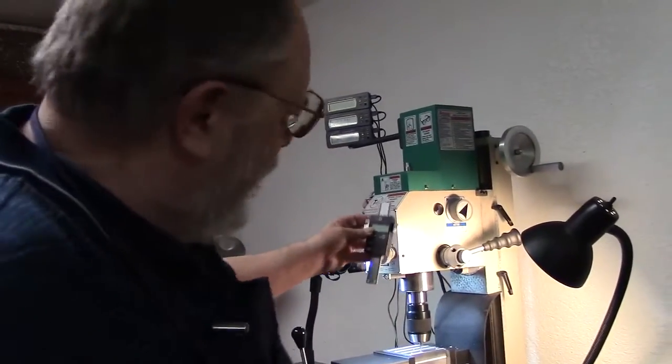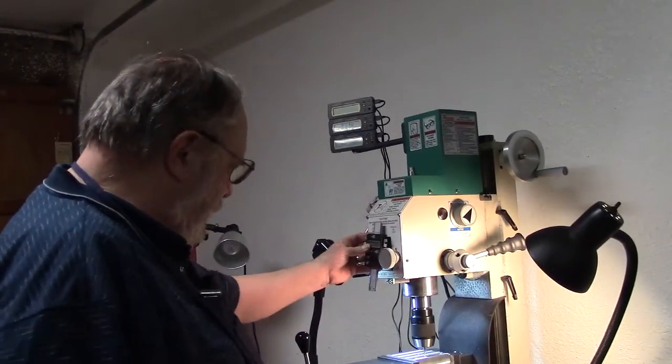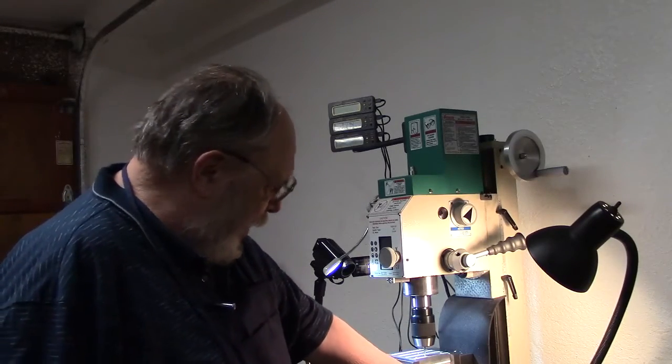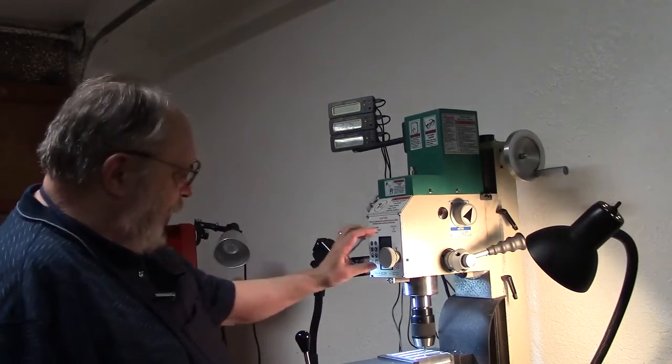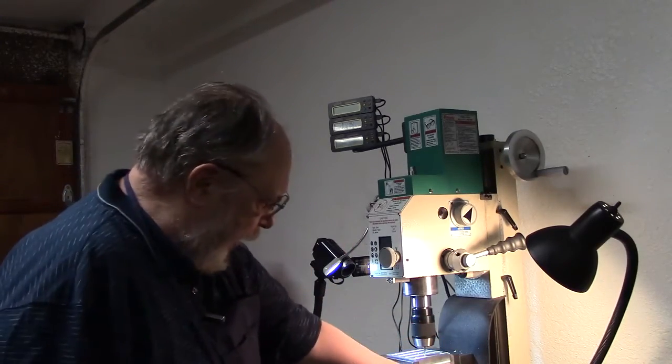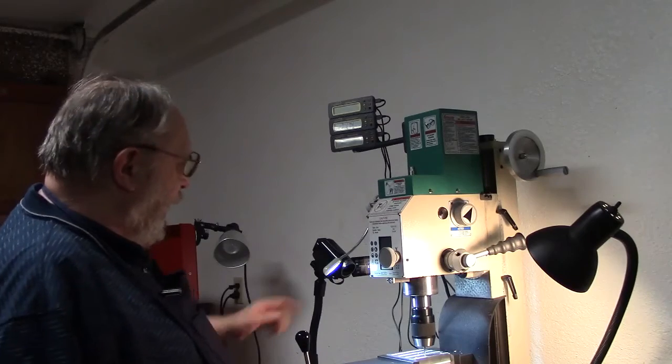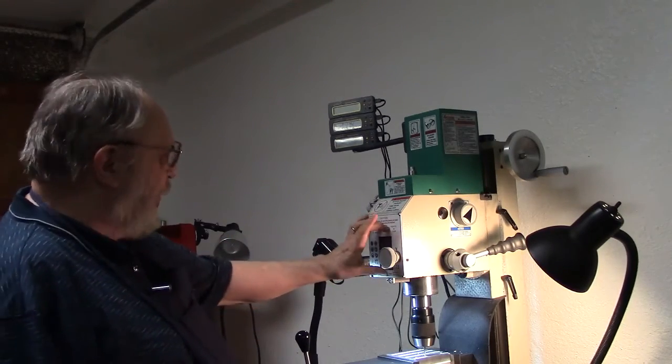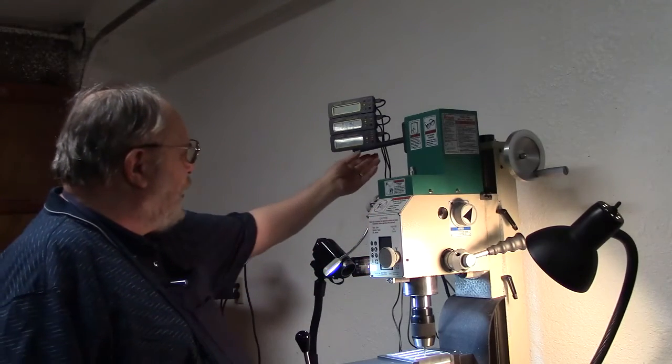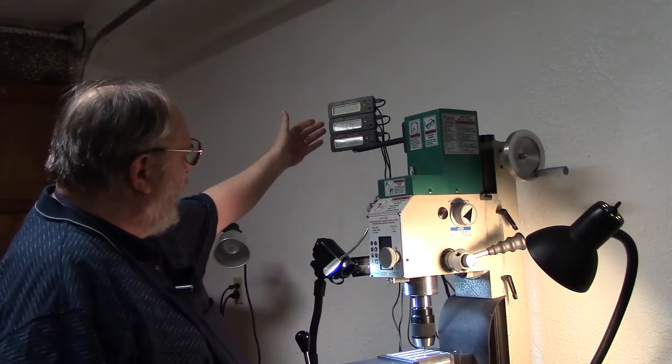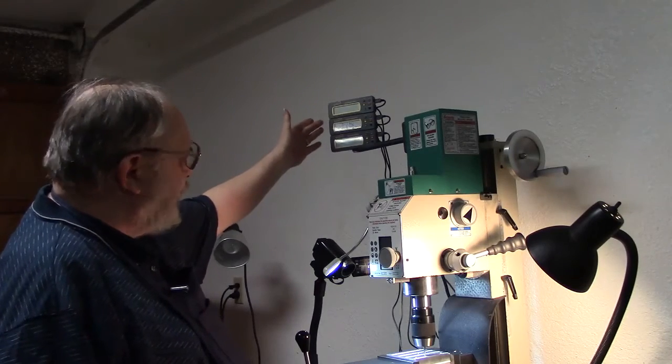However, it wasn't very bright, so I decided to put a DRO on this thing, and I swapped that unit out, this Grizzly one it came with, with an iGaging setup. It allowed me to put the Z-axis in first, and then it comes with a little arm like that, and I added a VX and a Y-axis.